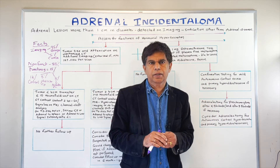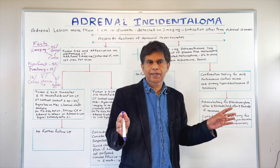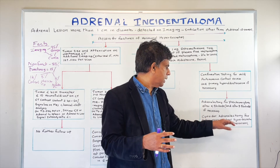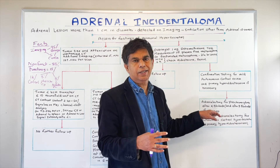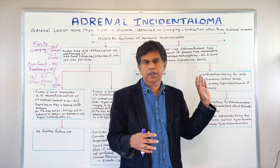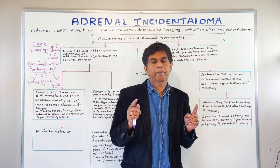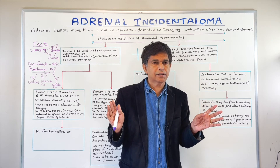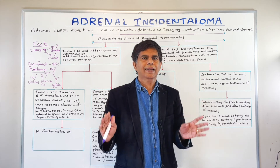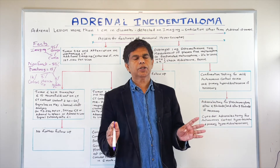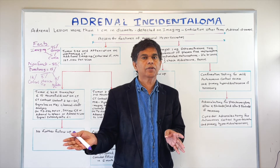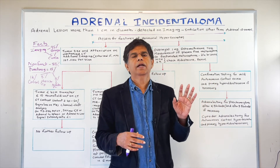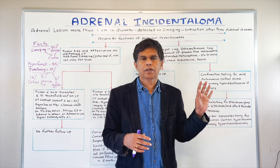If there is pheochromocytoma, you have to do adrenalectomy — but before adrenalectomy, make sure you do alpha blockade, and some patients need beta blockade also. If it is autonomous cortisol hypersecretion or primary hyperaldosterone syndrome, you can also consider adrenalectomy. Remember — for pheochromocytoma, make sure you take it out. I still remember Eisenhower, the U.S. president — he had six or seven heart attacks in his life, he used to have headaches and hypertension. At that time, they didn't know what was going on. Apparently he had pheochromocytoma, which was discovered at autopsy.